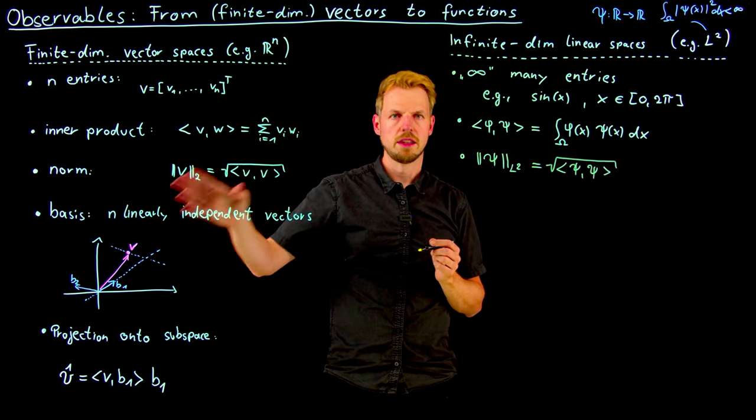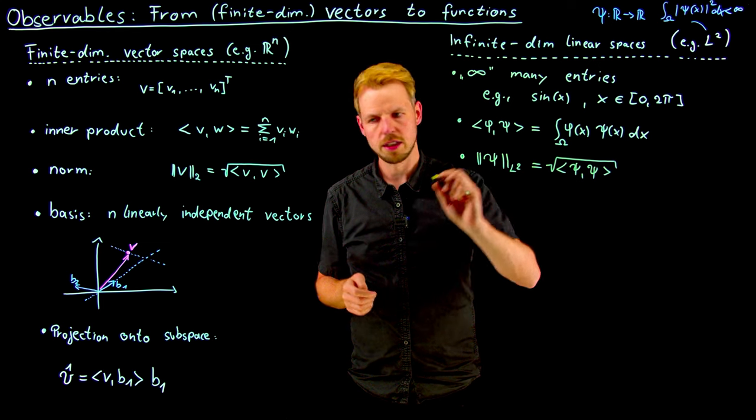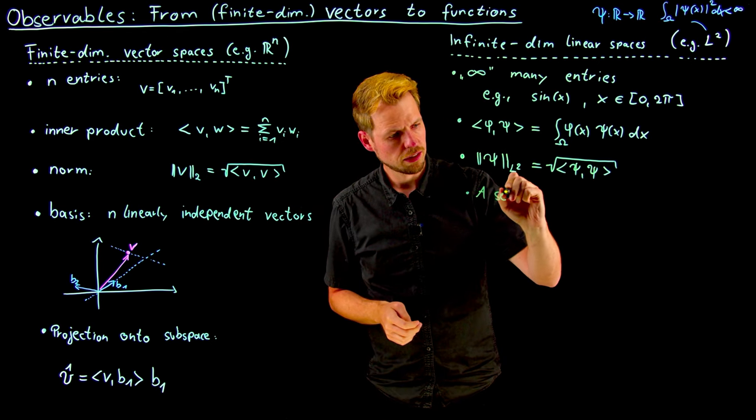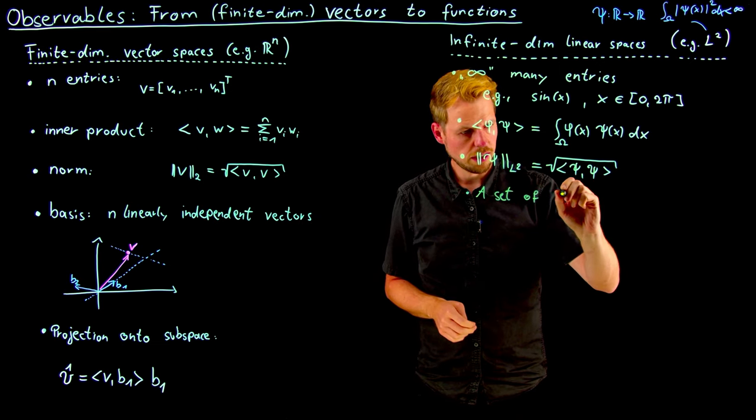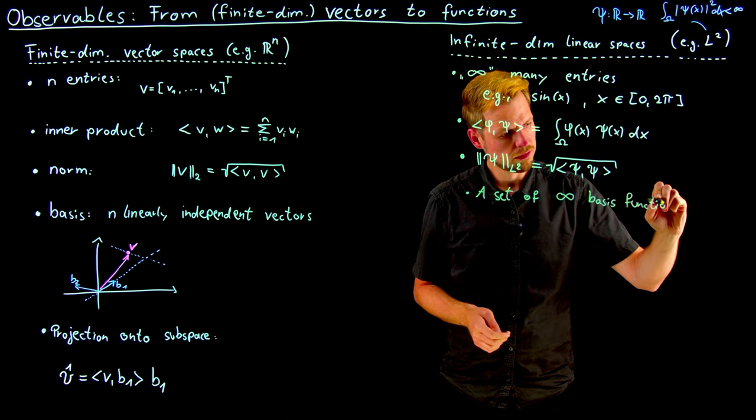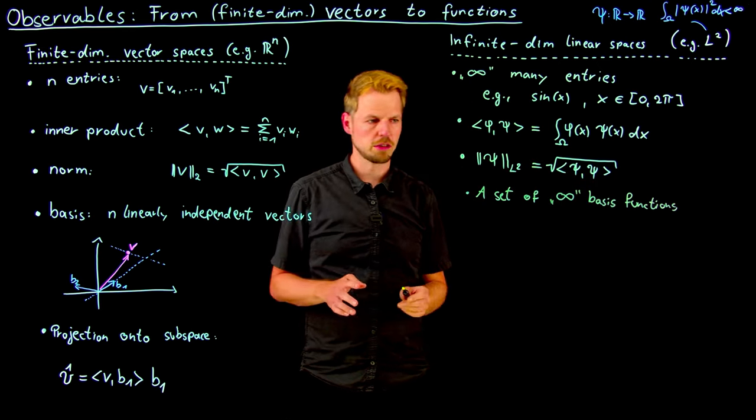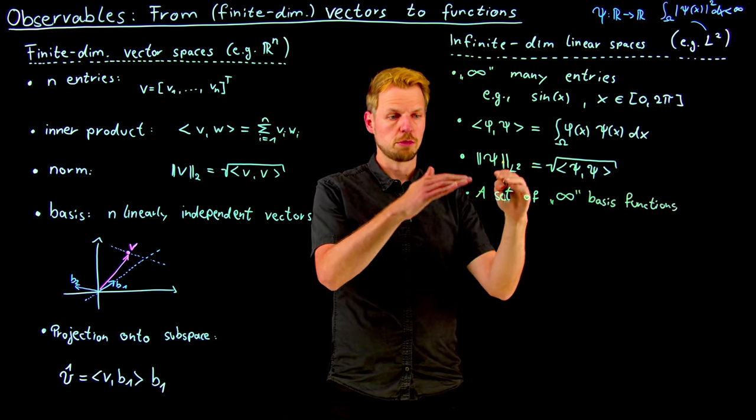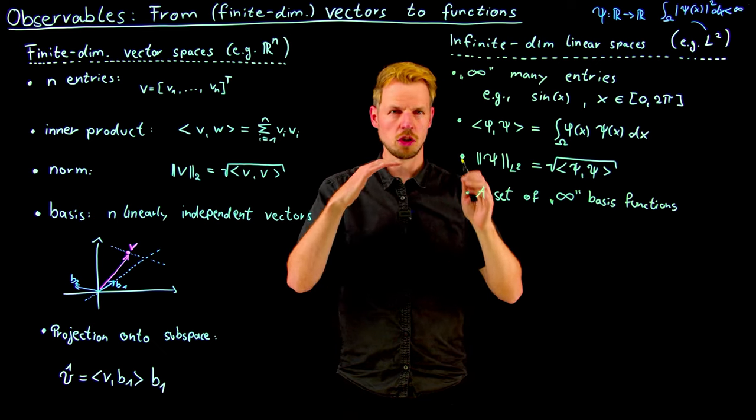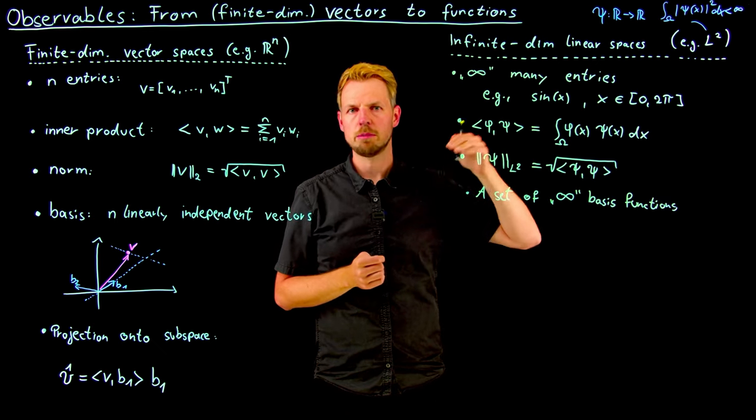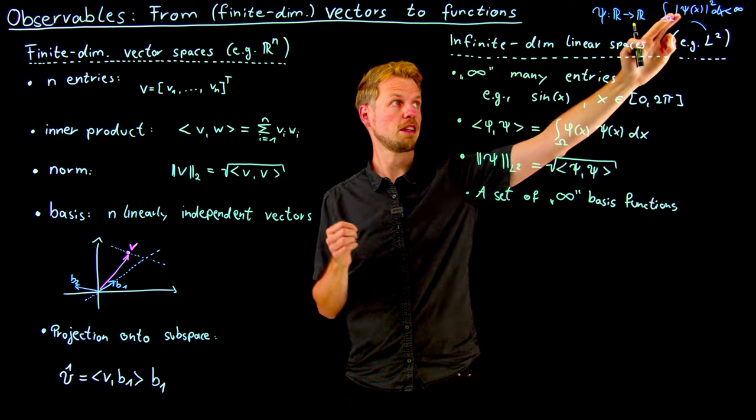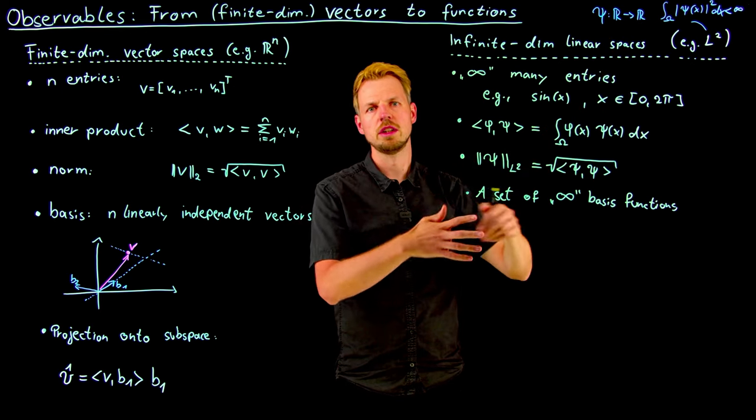This is where things can become tricky, but it's an extension. Here we have n linearly independent vectors, and here we have a set of infinitely many basis functions. If it's a function space and you want to express any element, we need infinitely many basis functions to superpose. Taking the first eight Hermite polynomials, we can approximate rather accurately, but more complicated functions need more basis functions - in the limit, an infinite number.